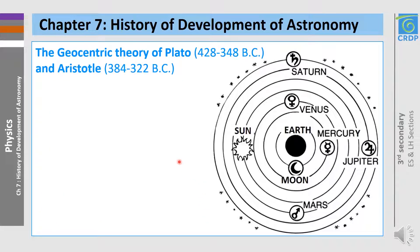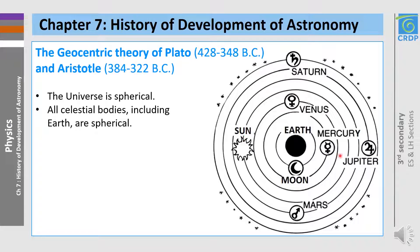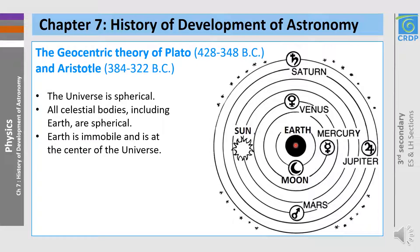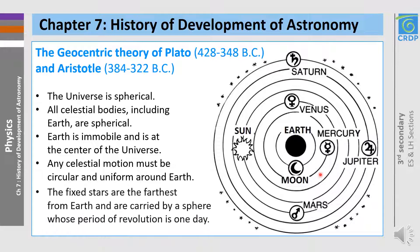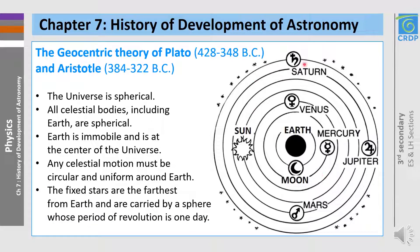Let's talk about the geocentric theory of Plato and Aristotle. The universe is spherical. All celestial bodies, including Earth and all the other planets, are spherical. Earth is immobile and it is at the center of the universe. Any celestial motion must be circular and uniform around Earth — uniform means at constant speed. The fixed stars are the farthest from Earth and are carried by a sphere whose period of revolution is one day, 24 hours.